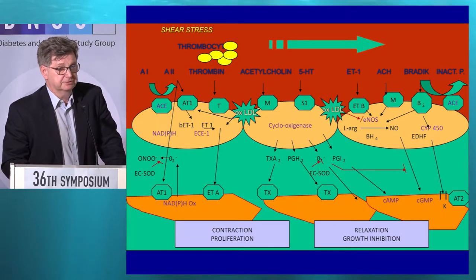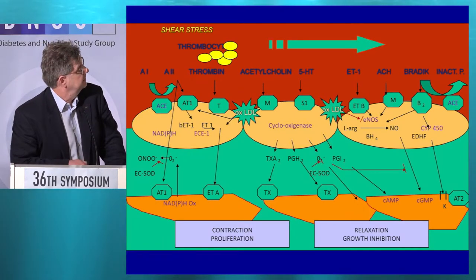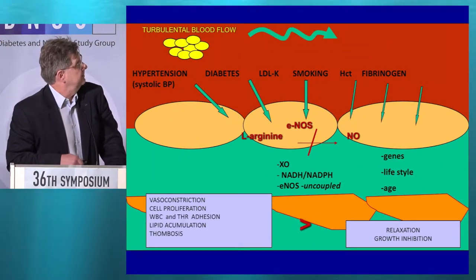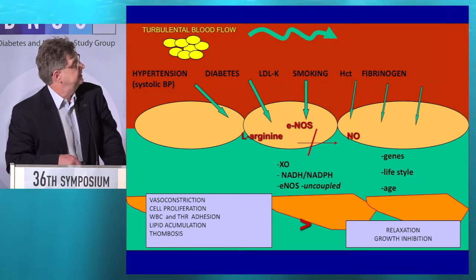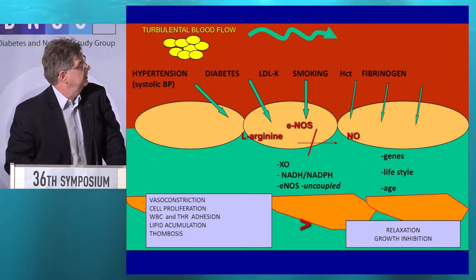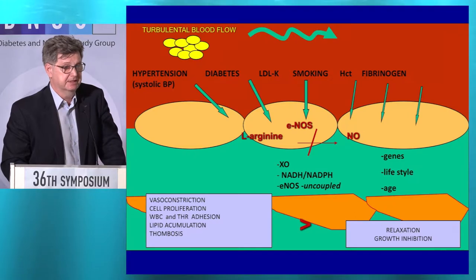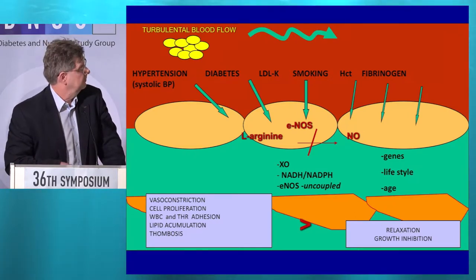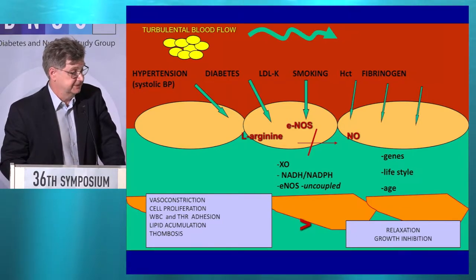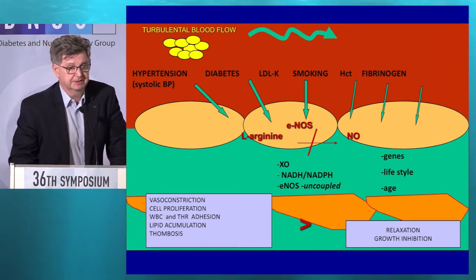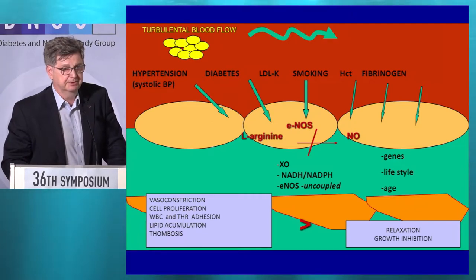Various hormones and peptides are involved in endothelial regulation — most importantly the components of the renin-angiotensin system, and also some others with vasodilatory properties. Hypertension, diabetes, obesity, dyslipidemia, smoking, hyperhomocysteinemia, and increased fibrinogen are all related to endothelial dysfunction and cause turbulent blood flow. There is no shear stress on the endothelial cells, only turbulent blood flow, leading to vasoconstriction and cell proliferation. This is the beginning of the cardiovascular, cardiorenal, or cardiometabolic continuum.